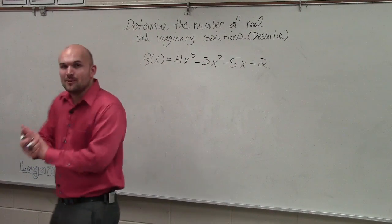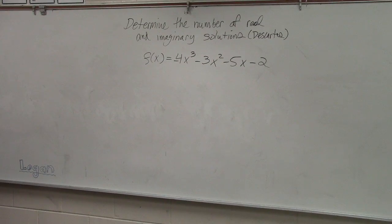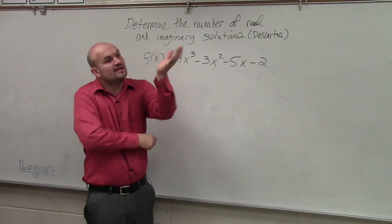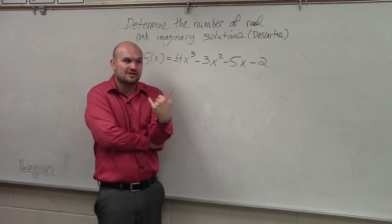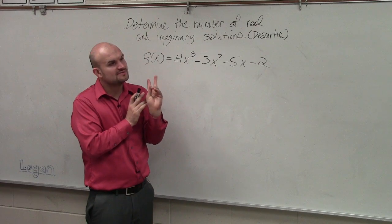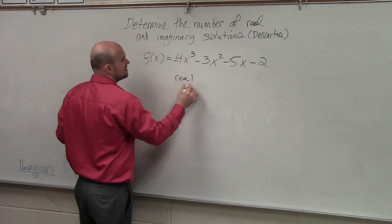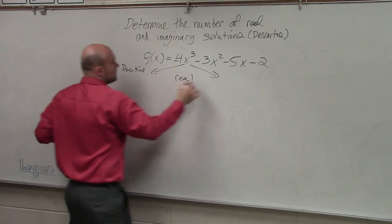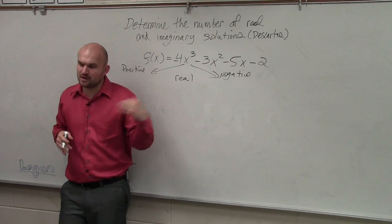Determine the number of real and imaginary solutions. Remember when we're discussing imaginary solutions and real number solutions, Descartes' rule of signs is going to give us the number of real and negative zeros. When we were finding zeros, we could find positive, negative, or imaginary. There are two different types of real solutions — they can be positive and they can be negative. Based on the number of real solutions, positive and negative, that will help us determine the number of imaginary.